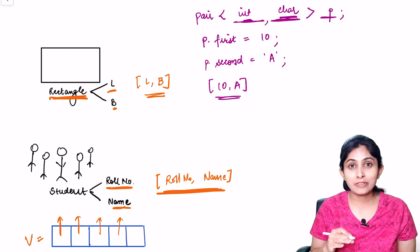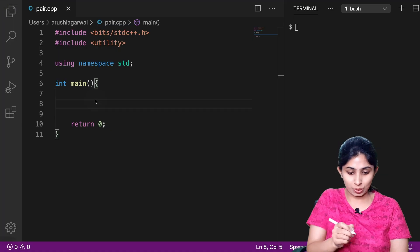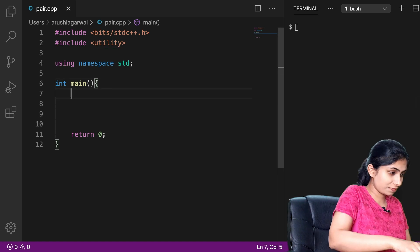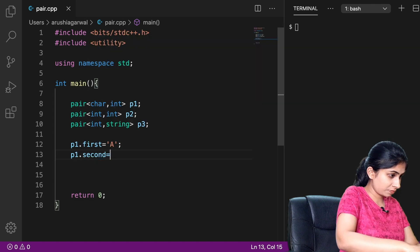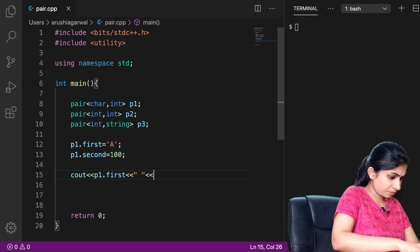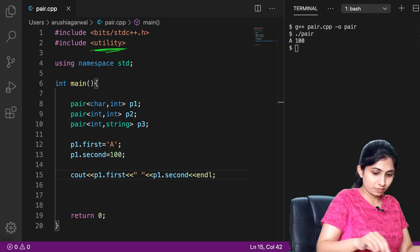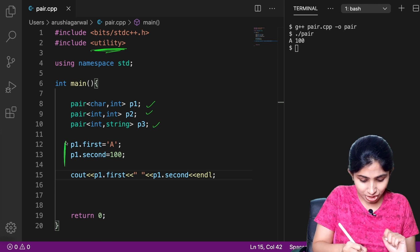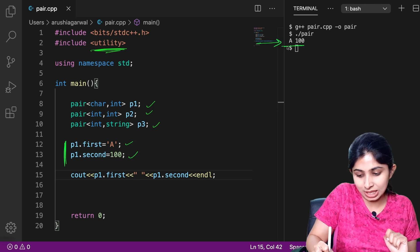Now let's see what are the different ways of initializing a pair through our code. To use STL pair we need to include the utility class. Now let's quickly define our pair. Here I defined three pairs p1, p2 and p3 and I initialize the pair p1 with a and 100 and I got the output as a and 100.